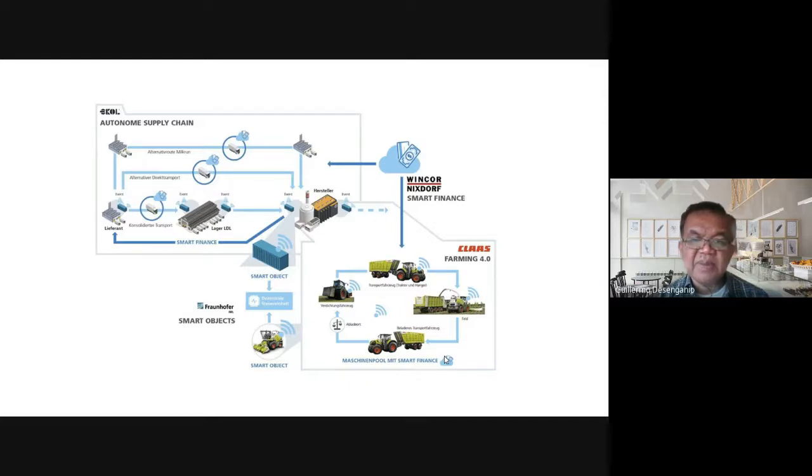Here is a sample of a supply chain, a graph of a supply chain. Same thing from production, but this is more advanced because this is what we call farming 4.0, not necessarily the traditional one, but rather incorporating new technology like smart financing. Transactions are done using the internet. A sample of that is GCash.